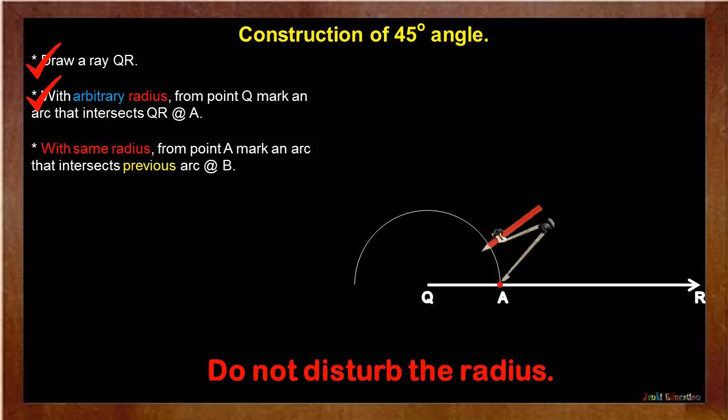Then, with same radius from point A, mark an arc that intersects previous arc at B.